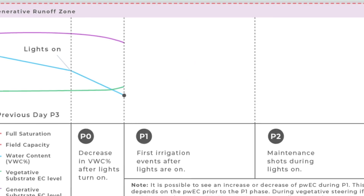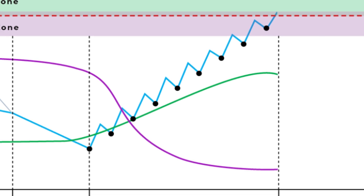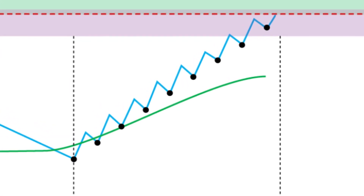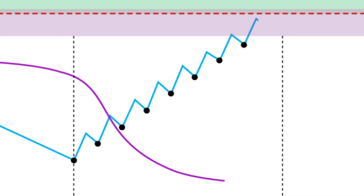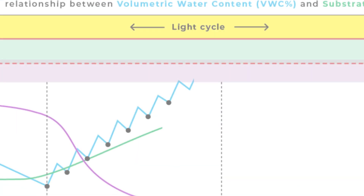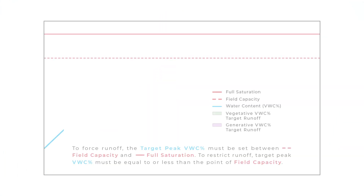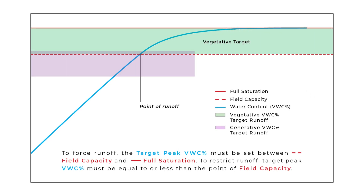During P1, it is possible to see an increase or decrease in substrate EC. This depends on the substrate EC prior to the start of irrigation events. During vegetative steering, if substrate EC is equal to your input EC, P1 irrigation events will cause an increase in substrate EC until runoff occurs. During generative steering, substrate EC is typically greater than your input EC, and P1 irrigation events will cause a decrease in substrate EC due to dilution. Our P1 irrigation phase is very important because it sets our target BWC percent that will be maintained throughout the day during our P2 phase. It is very important to select the target BWC percent that aligns with your substrate EC goal, determined by whether you're steering vegetatively or generatively.